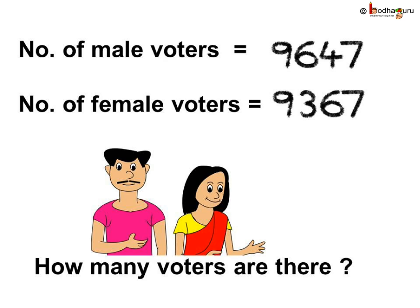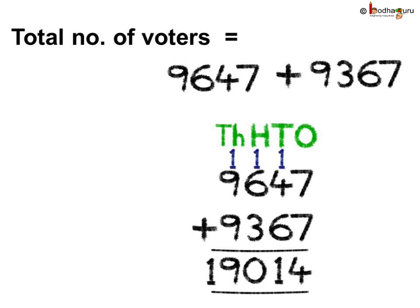So, we need to add the total number of male and female voters to find the total number of voters. The total number of voters are 9,647 plus 9,367.